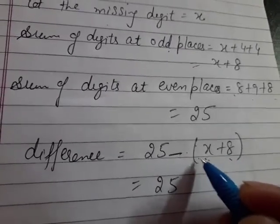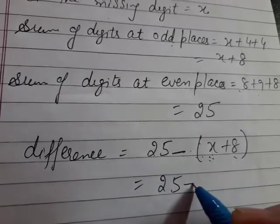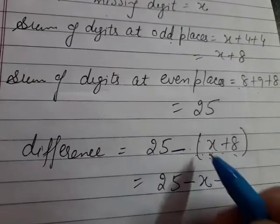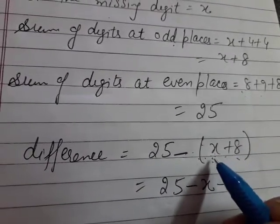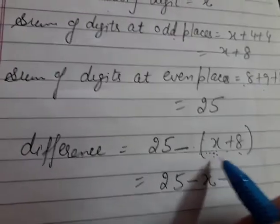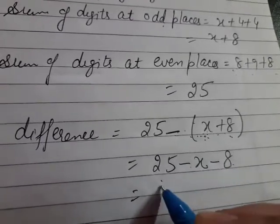Now we open the bracket. We put brackets because there are two digits, two terms. When we open the bracket, both their signs will change. This x which is plus, what will it become? Minus. This 8 which is also plus, what will it become? Minus 8. When we open a bracket, the signs of the terms inside change. Positive becomes negative, negative becomes positive. So both are positive, both will become negative. And 25 minus 8 becomes 17. So 17 minus x.